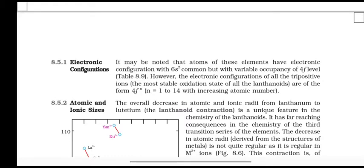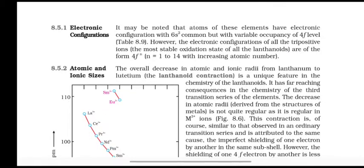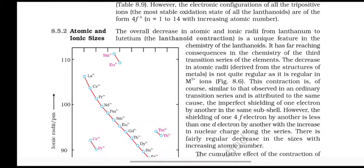Atomic and ionic sizes. The overall decrease in atomic and ionic radii from lanthanum to lutetium, the lanthanoid contraction, is a unique feature in the chemistry of the lanthanoids. It has far-reaching consequences in the chemistry of the third transition series of elements. The decrease in atomic radii is not quite regular as it is in M3+ ions. This contraction is similar to that observed in ordinary transition series and is attributed to the same cause: the imperfect shielding of one electron by another in the same sub-shell.